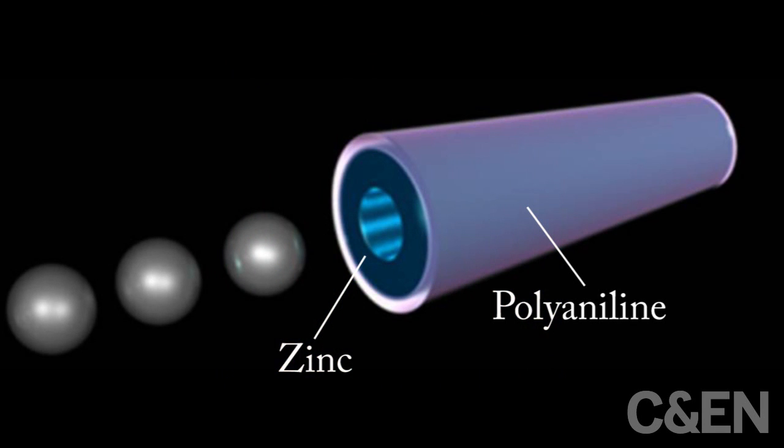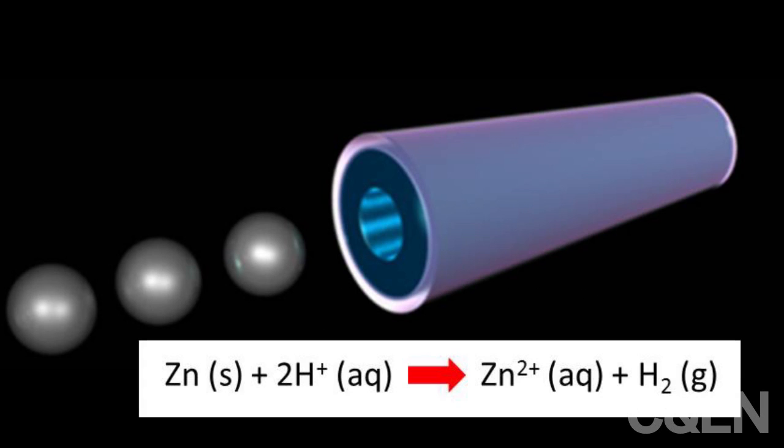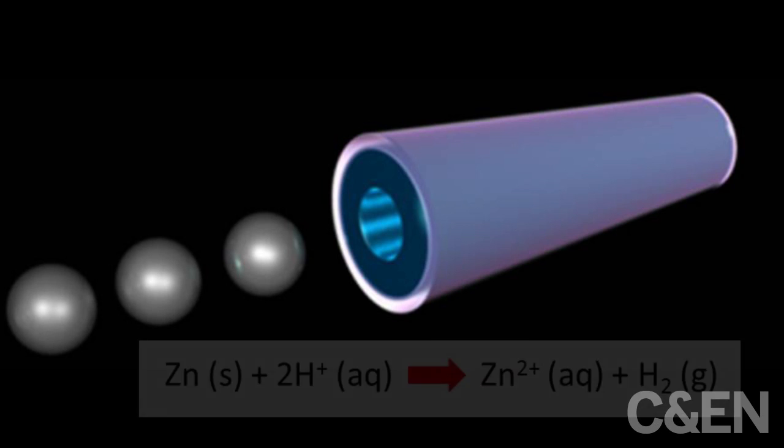The tubular rockets are composed of an outer layer of polyaniline and an inner layer of zinc. It's this zinc layer that's the engine of the rocket. Acid protons get reduced on the zinc surface and converted into hydrogen, which forms bubbles and pushes the rocket forward.